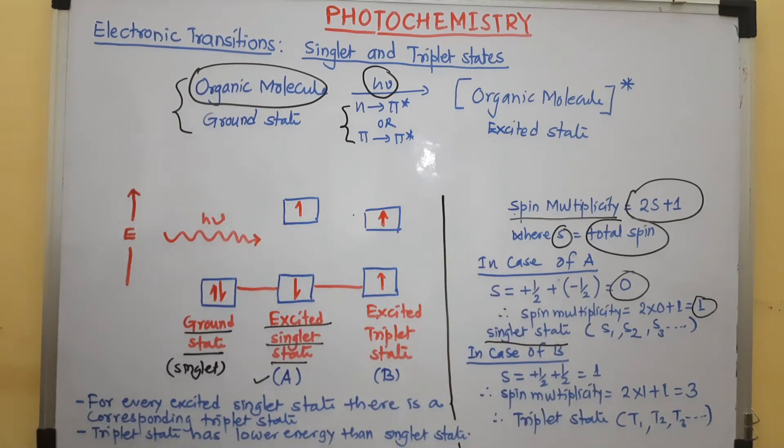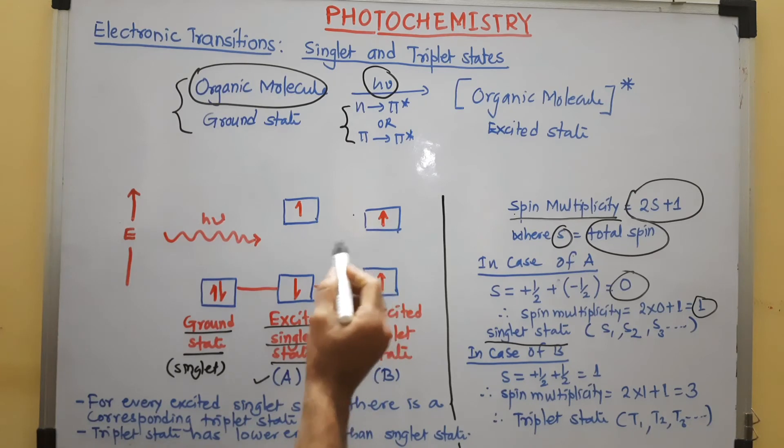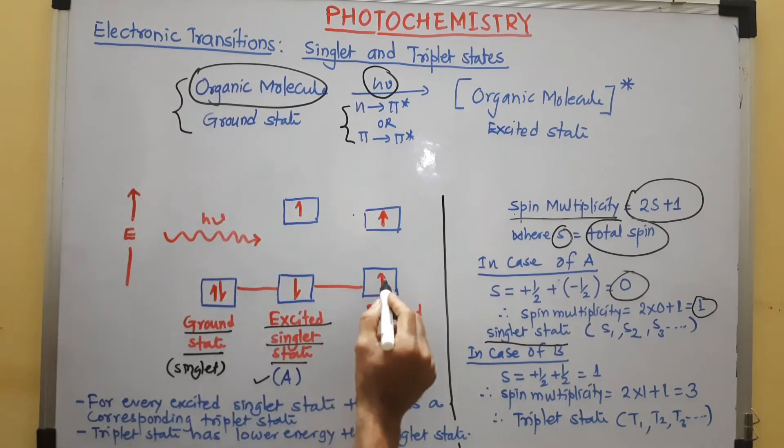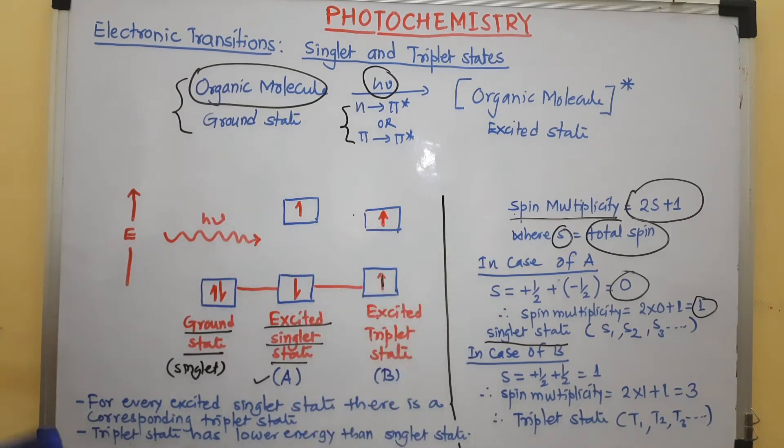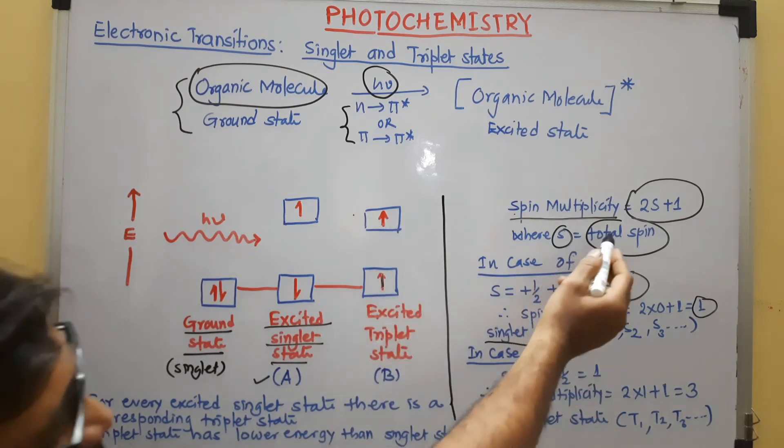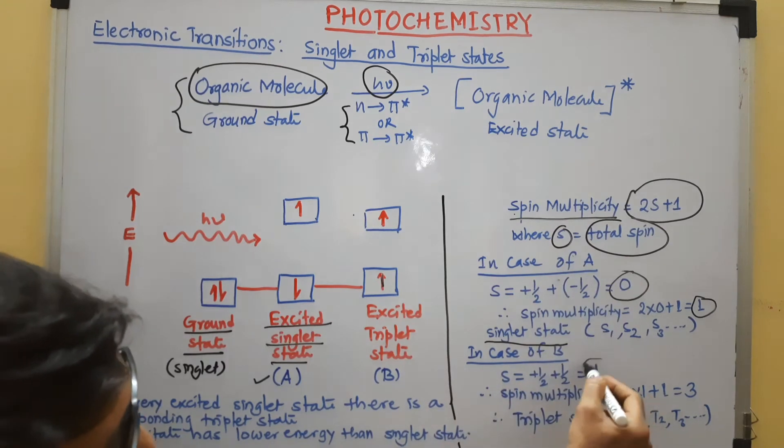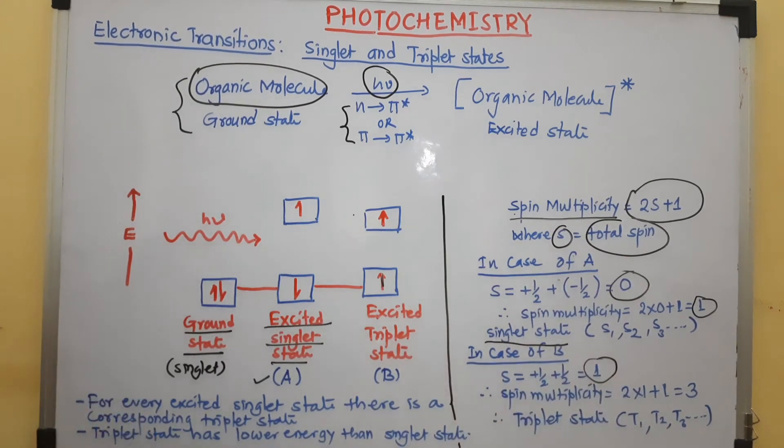Another possibility is the excited electron may change its spin. Now, both electrons—electron in the ground state and electron in the excited—having same spin. So, that same spin means plus half and plus half. When you add that spin, we get here a total spin and that total spin is 1.